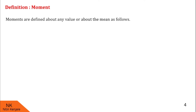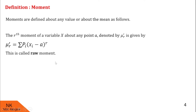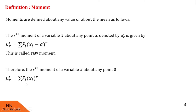Let us properly define moment. Moments are defined about any value or about the mean. The rth moment of variable x about any point A is denoted by μr' and is given by summation pi times (xi minus a) whole raised to r. This is called a raw moment. Therefore, the rth moment of variable x about 0 is given by summation pi · xi^r, obtained by substituting a equal to 0 in this formula.